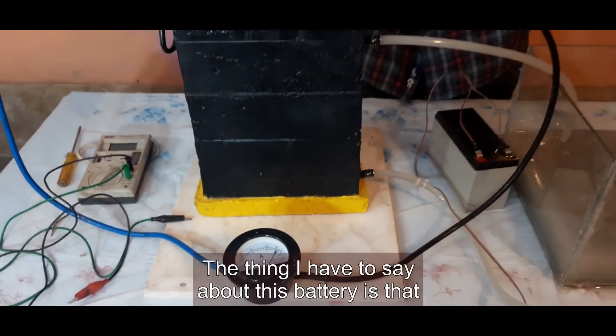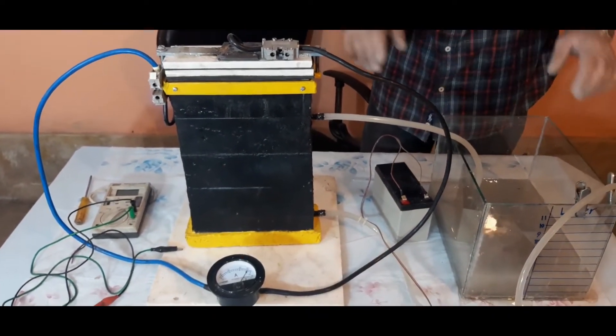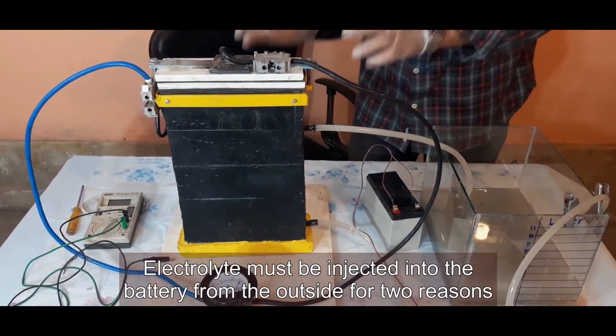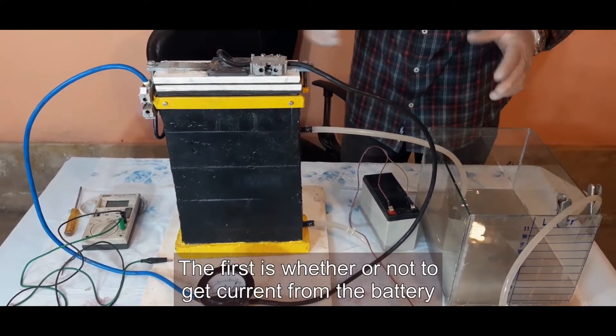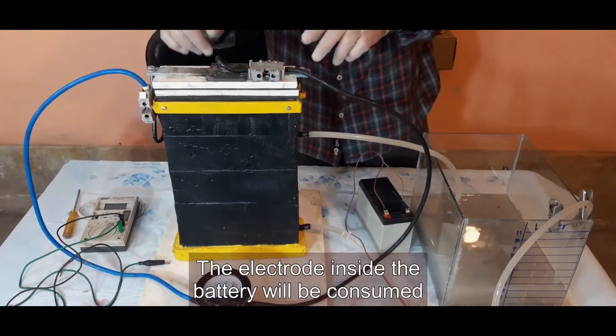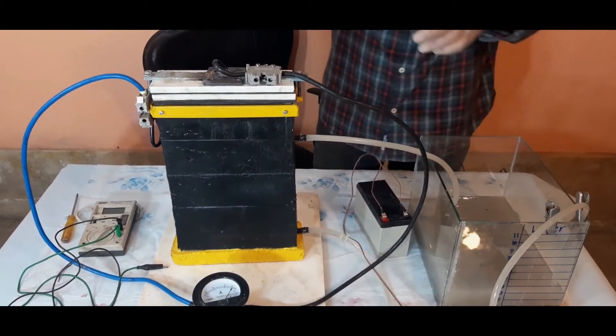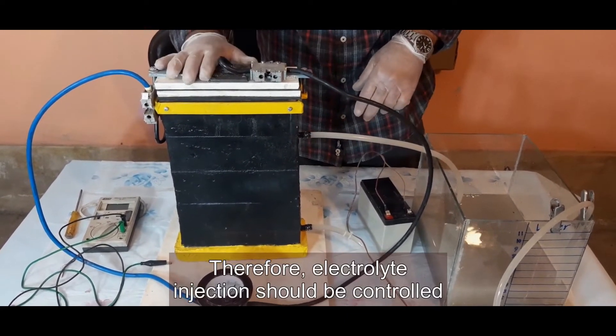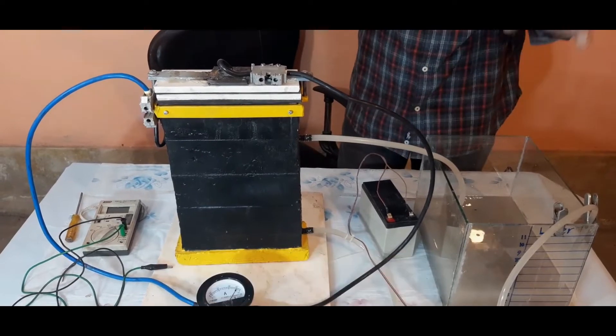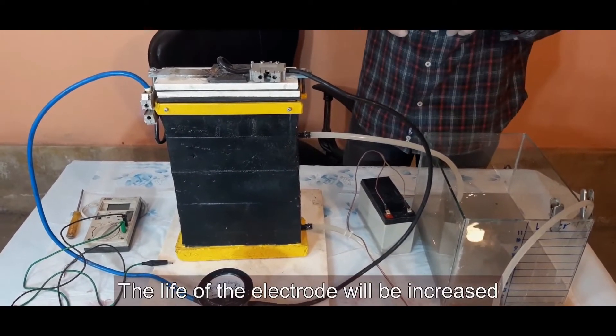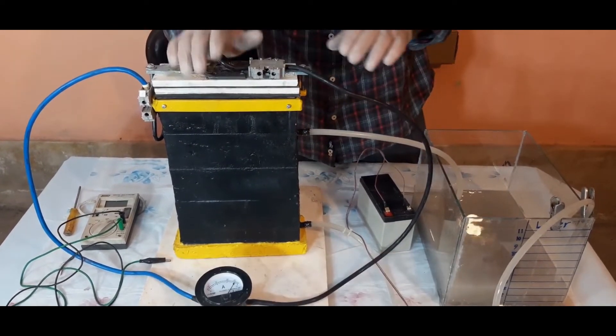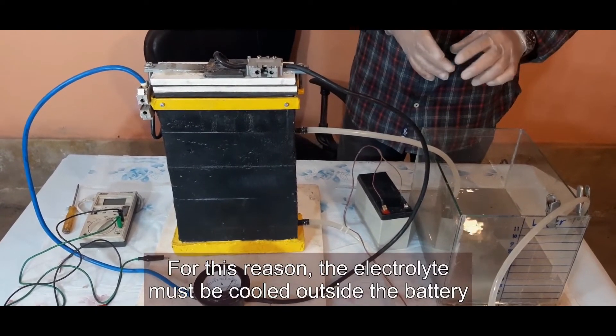The thing I have to say about this battery is that electrolyte must be injected into the battery from the outside for two reasons. The first is whether or not you get current from the battery, the electrode inside the battery will be consumed. Therefore, electrolyte injection should be controlled. And by removing the electrolyte, if you do not need a battery, the life of the electrode will be increased. Second, the reaction inside the battery is extremely exothermic. For this reason, the electrolyte must be cooled outside the battery.